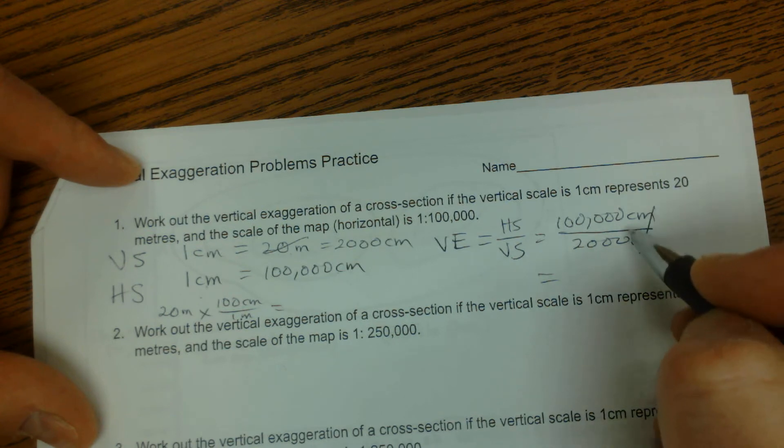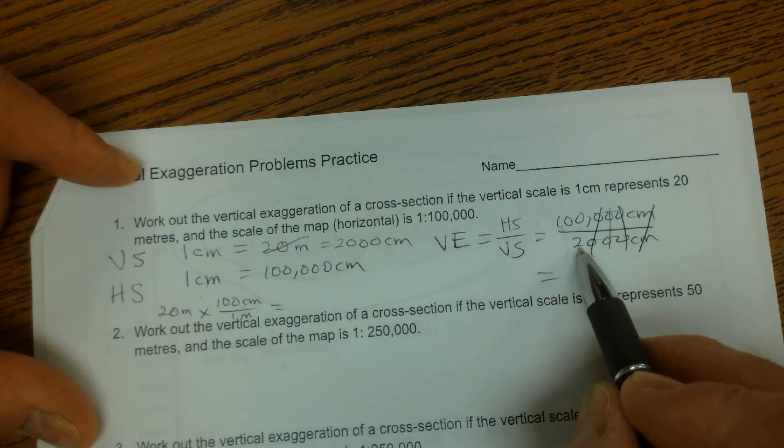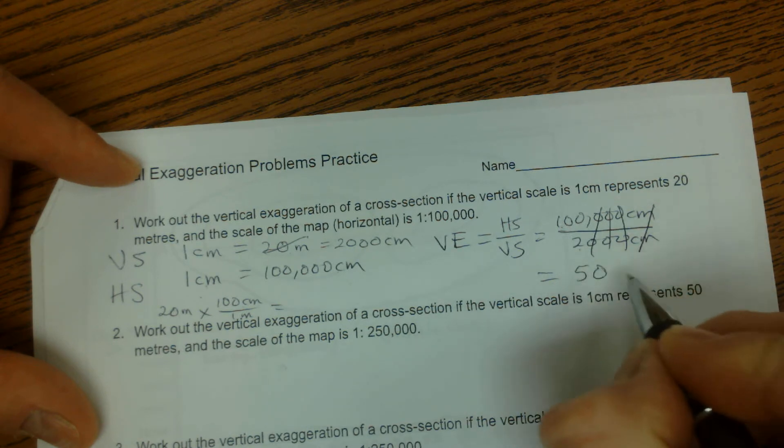The units cancel, and then I get these three zeros all cancel away. I end up with 100 divided by 2, and that's 50.